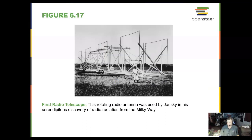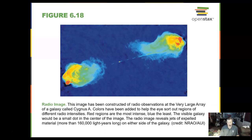Here's the first radio telescope — very basic. This telescope was used by Jansky in his discovery of radio radiation from the Milky Way. This is what a radio image looks like: there is a galaxy in the middle that doesn't give off very much radio information, but coming off two lobes far out into space, we see these jets coming from this image.